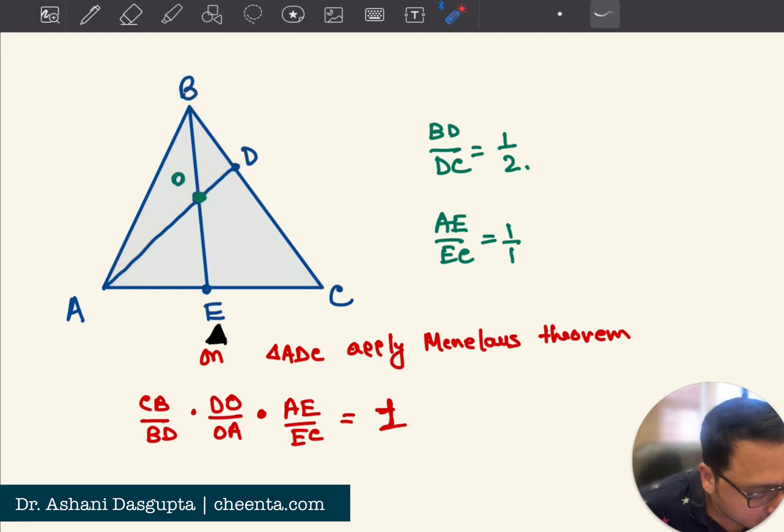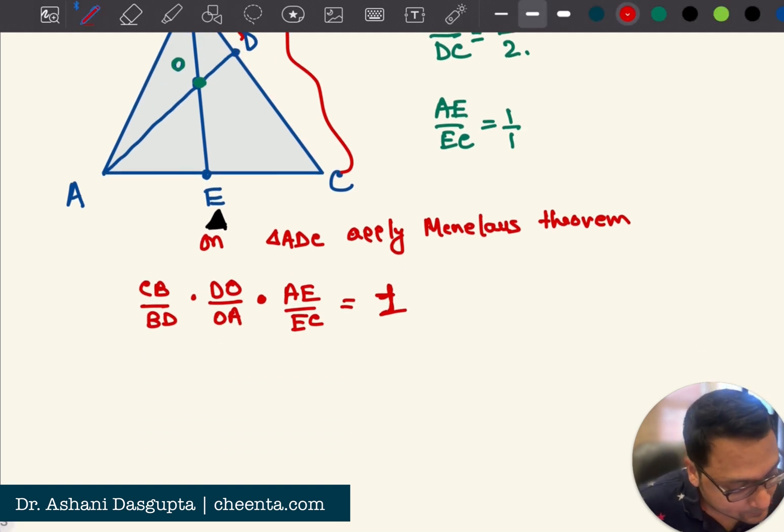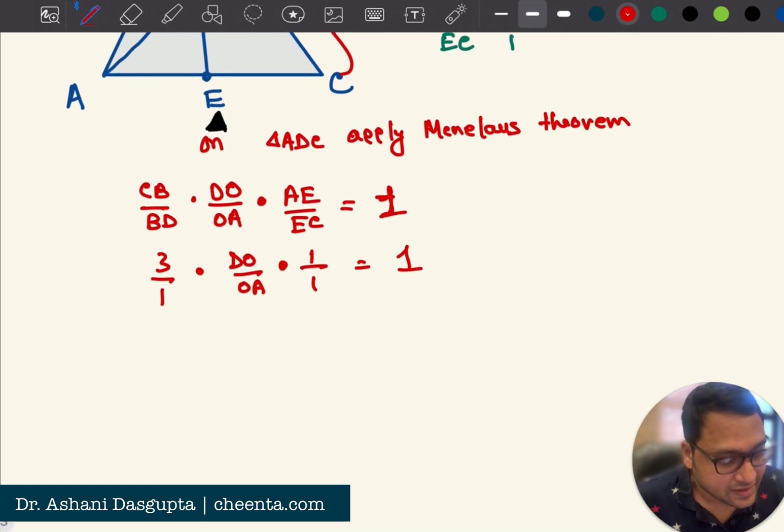So what is CB is to BD? CB is to BD, CB is to BD is three is to one, right? Because it was divided into three parts, the entire thing is three, so this is one. So three is to one times DO is to OA, that's what we want to find out, times AE is to EC is one is to one, so it's equal to one. So finally,